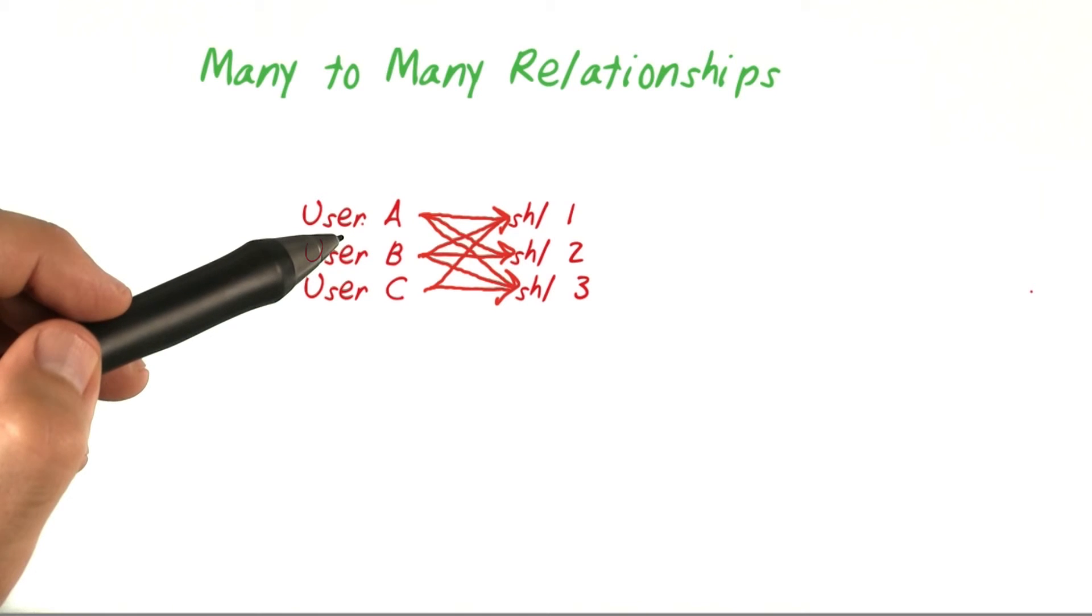As you might expect, whereas a one to one relationship is pretty easy to show in your data, and even a one to many relationship is about as complicated as a list, many to many relationships get a bit more tricky.